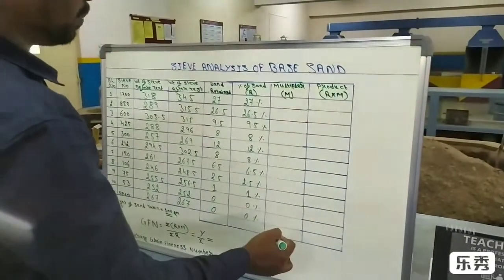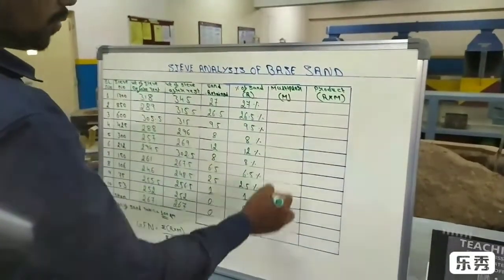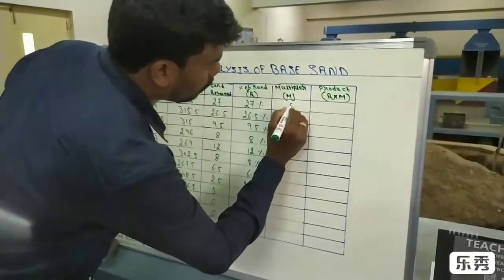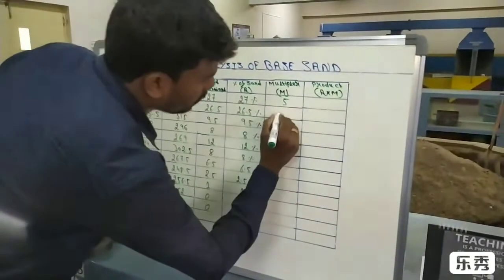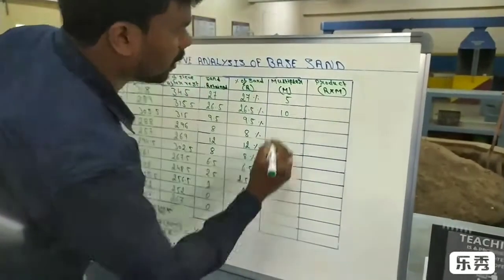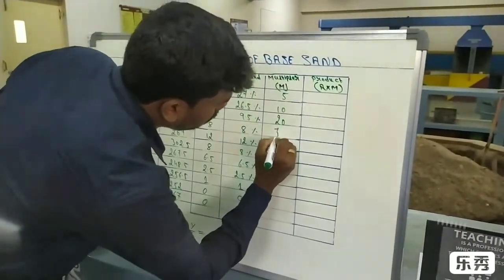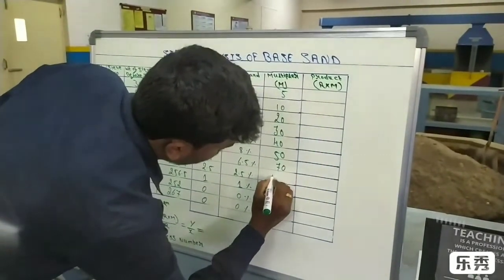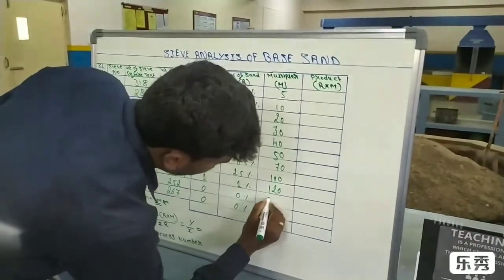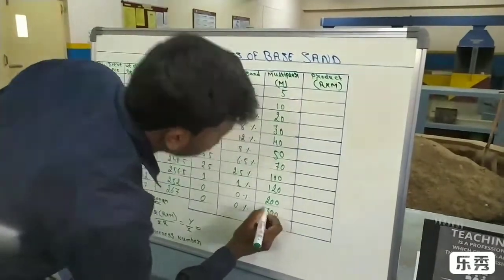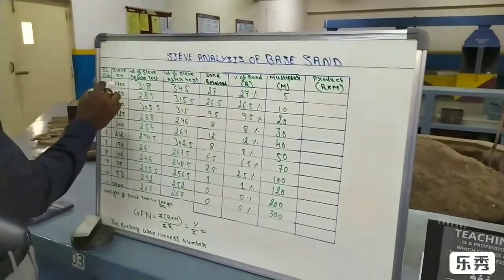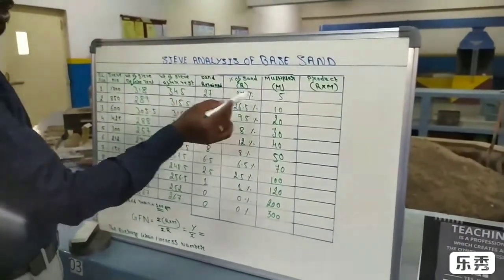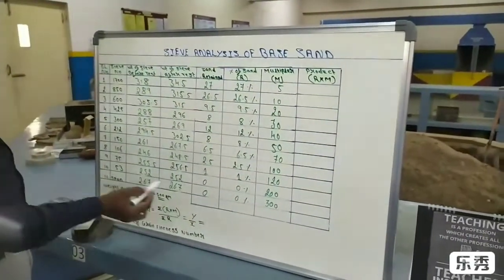Next we write the multipliers — these are standard numbers assigned to each sieve. For 1700 micron sieve the multiplier is 5; for 850 microns it is 10. In order: 5, 10, 20, 30, 40, 50, 70, 100, 120, 200, and for the pan, 300. These are the standard multipliers. As the sieve micron size decreases, the multiplier increases. The pan multiplier is 300.